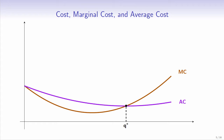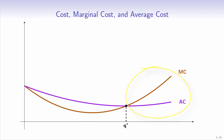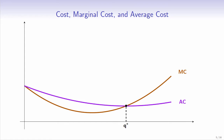In this range, the incremental costs, also known as marginal costs, are less than the average, so the average is getting pulled down. Once the firm expands beyond Q star units of output, also known as the minimum efficiency scale, marginal costs start to pull the average costs up.